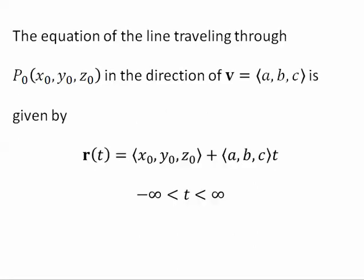The equation of the line traveling through p-naught in the direction of v is given by the vector-valued function (x₀, y₀, z₀), that vector, plus v times a parameter t.